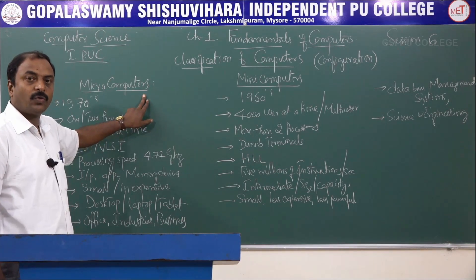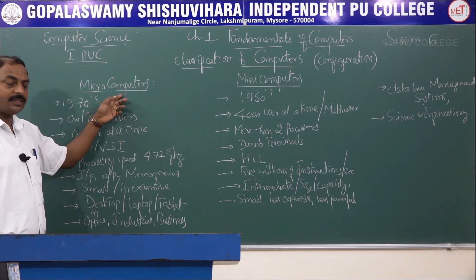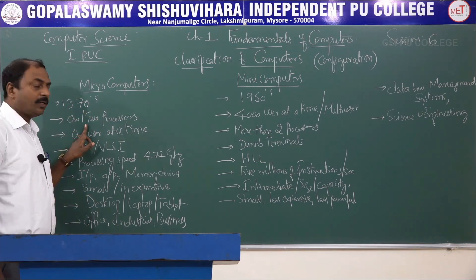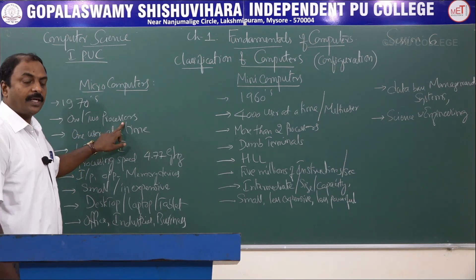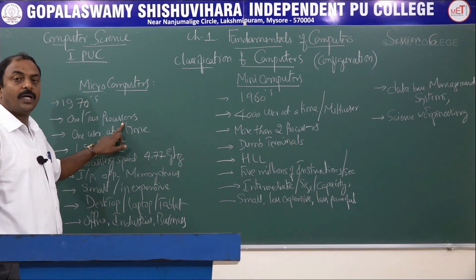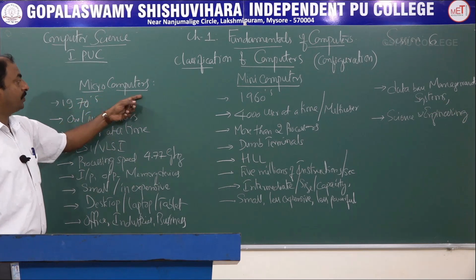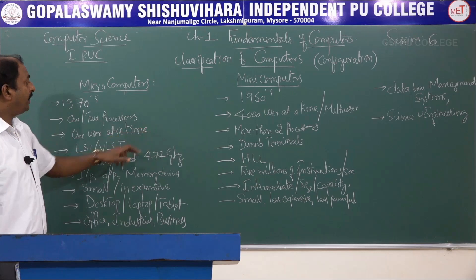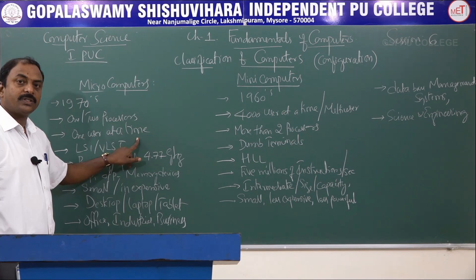Microcomputers are the computers we use today. They started around the 1970s and have one or two processors. As studied in our previous session on generations of computers, these use microprocessors. It is a single-user system — only one user can use the system at a time.